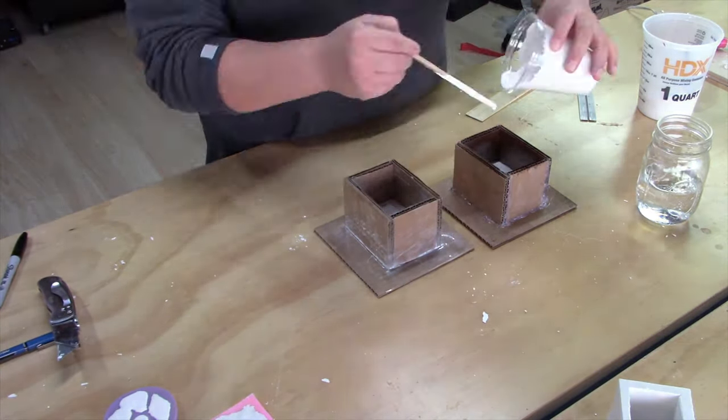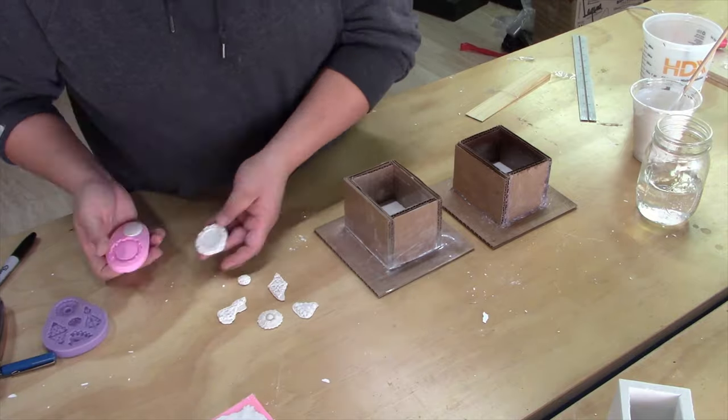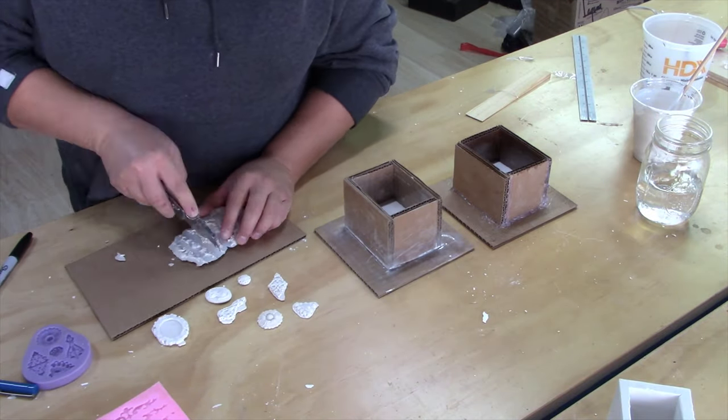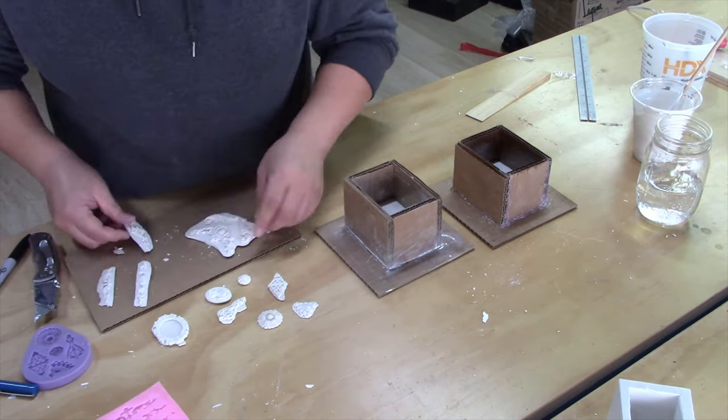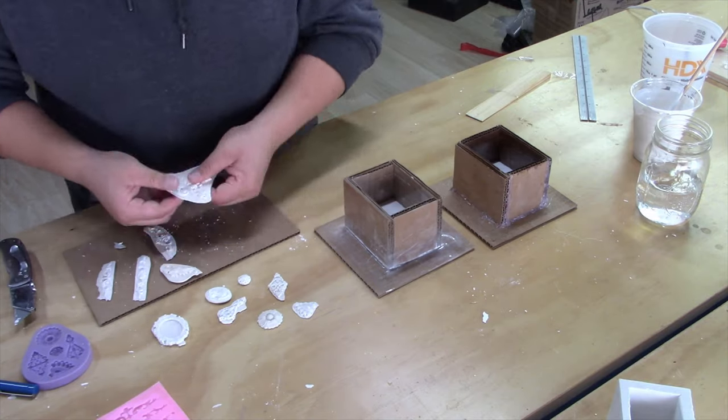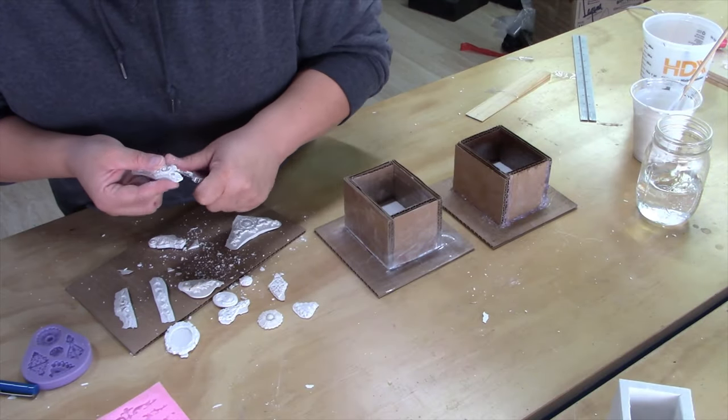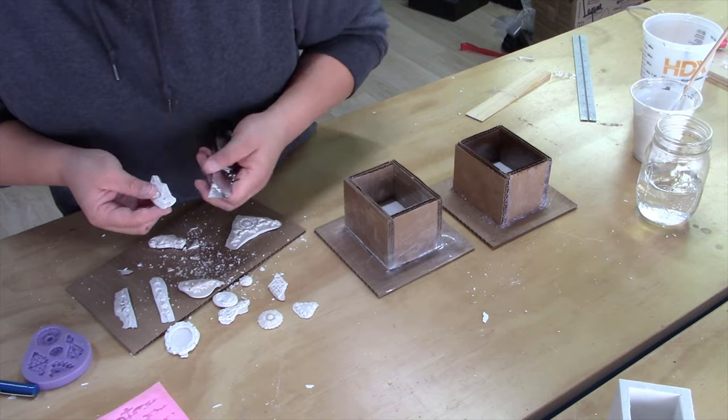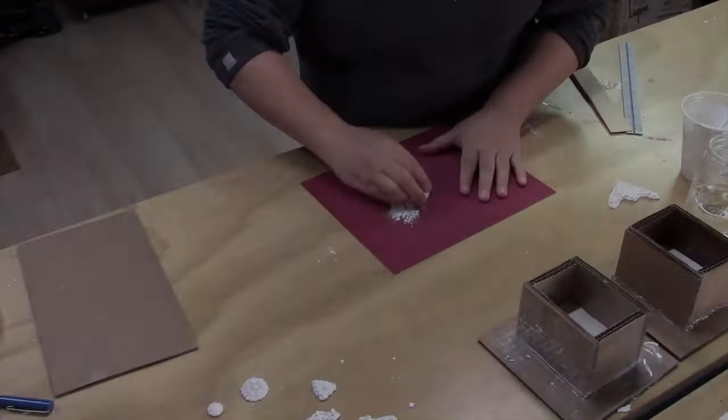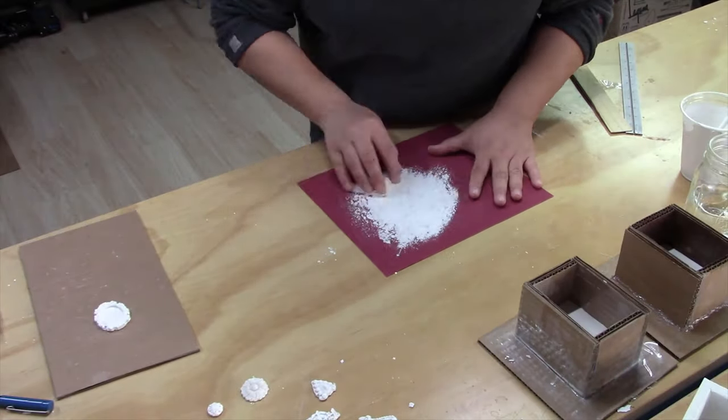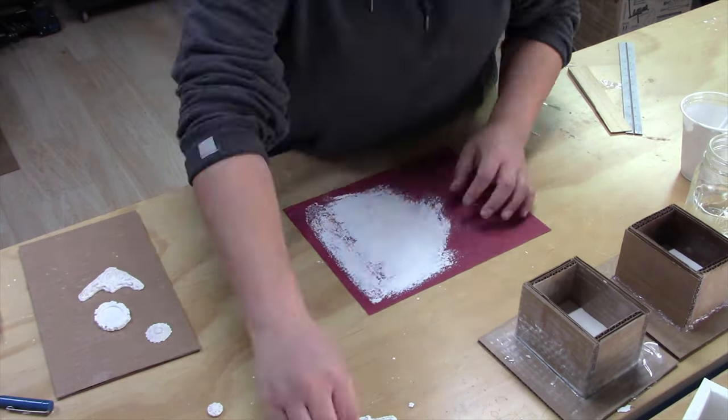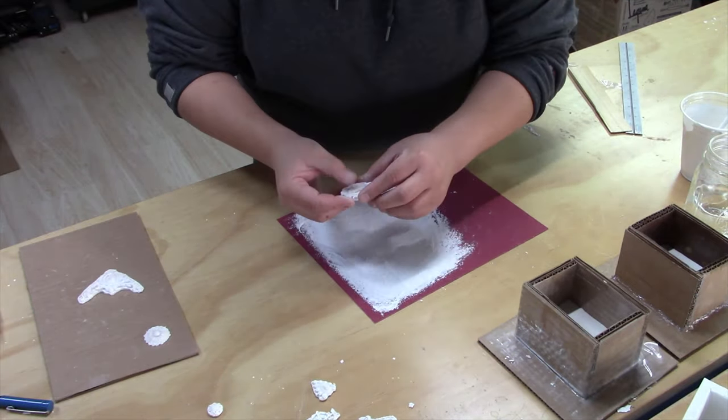After pouring my lids I demolded the decorative casts. To separate the large seat I scored a line and cracked them apart. I was able to do the cleanup with my utility knife and some sandpaper. If you are new to this channel please hit that subscribe button. It really helps me out.